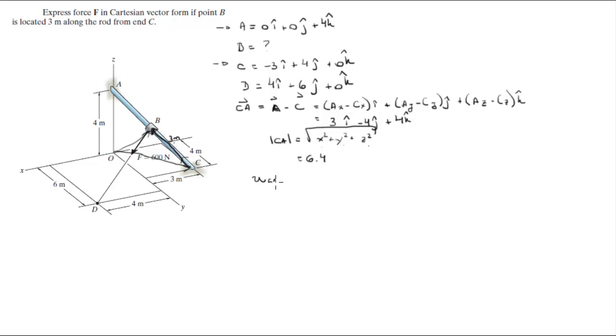Now to find the unit vector CA, this tiny unit vector right here with a magnitude of 1, you're gonna do the vector CA divided by its magnitude. That is absolute value CA, and you're gonna get that dividing this 3, this 4, and this 4, dividing them by this 6.4, and you're gonna get this unit vector: 0.469i minus 0.625j plus 0.625k.